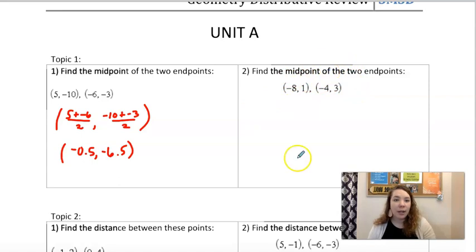Same thing here. You can add them together. This would be negative 12 over 2 is negative 6. This would be negative 4 over 2 is negative 2. It's just the middle point.